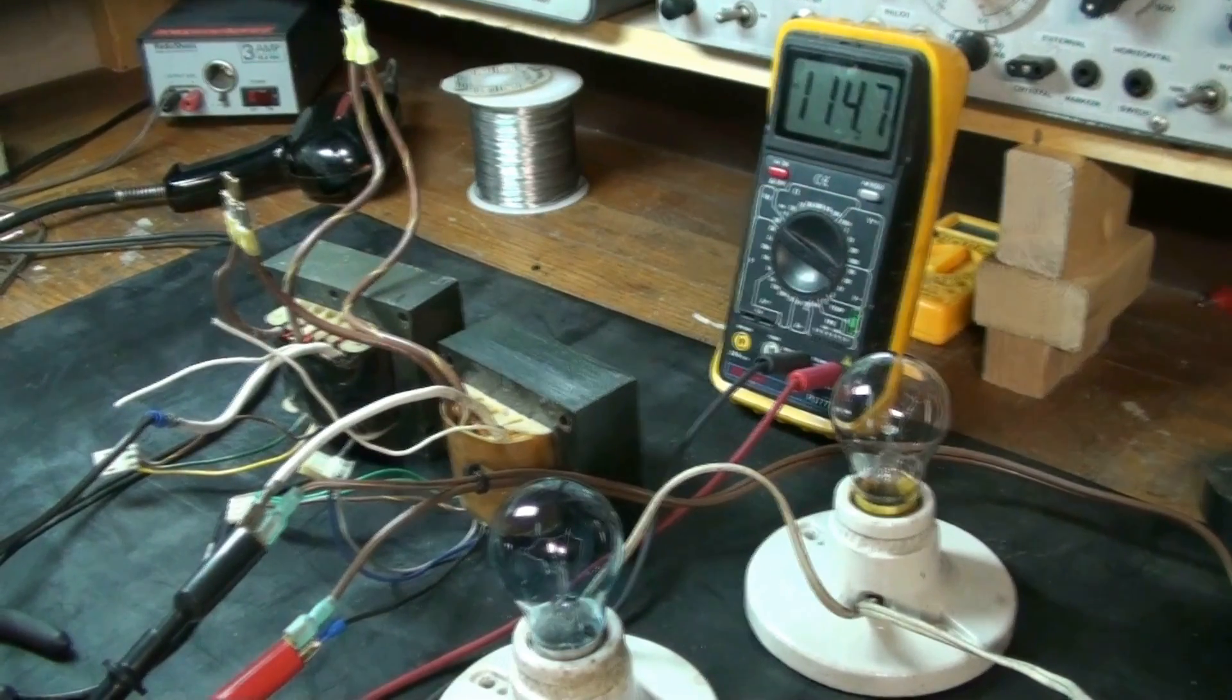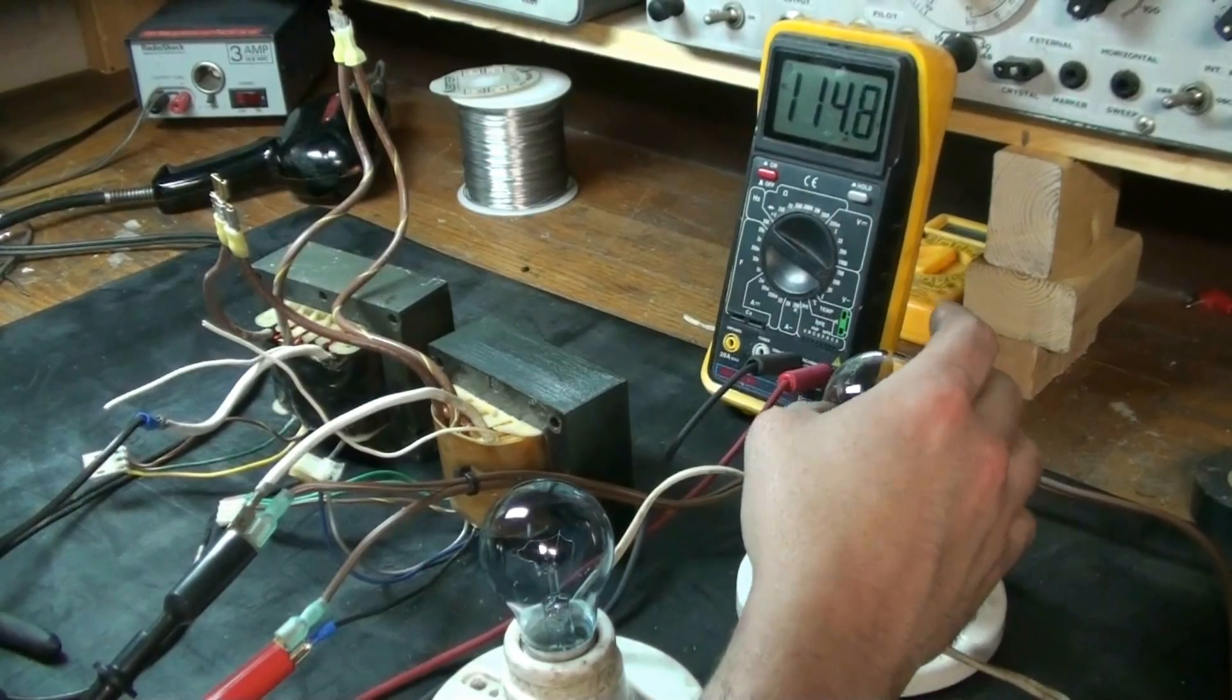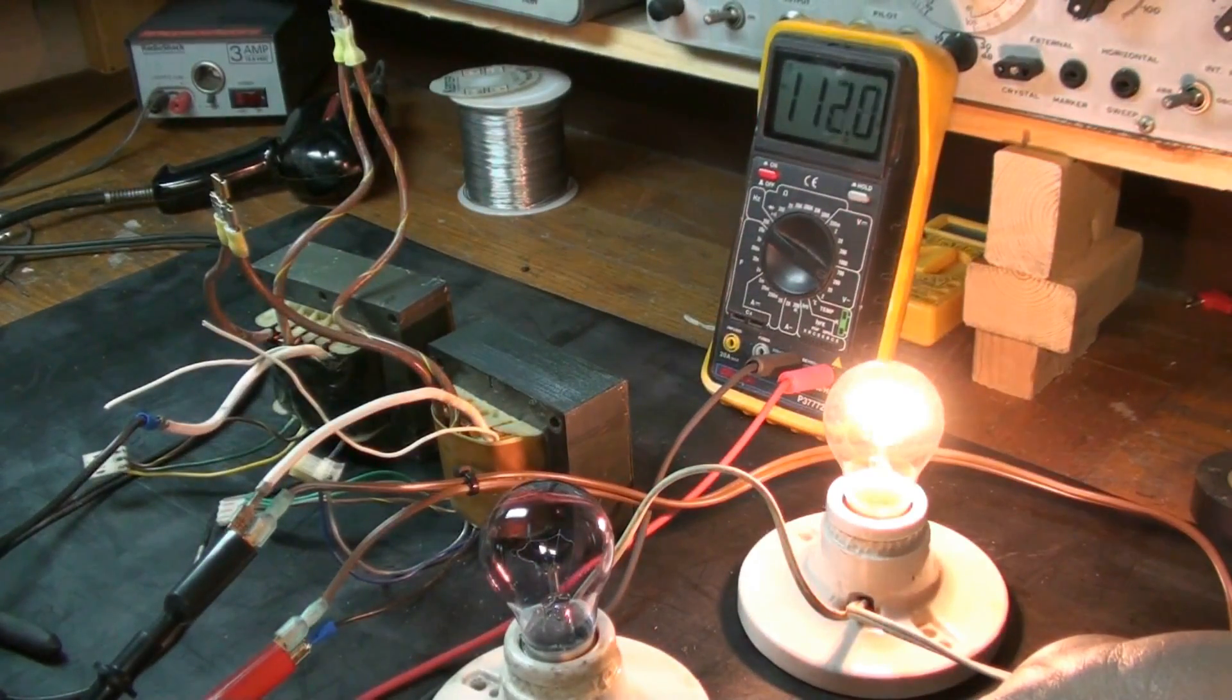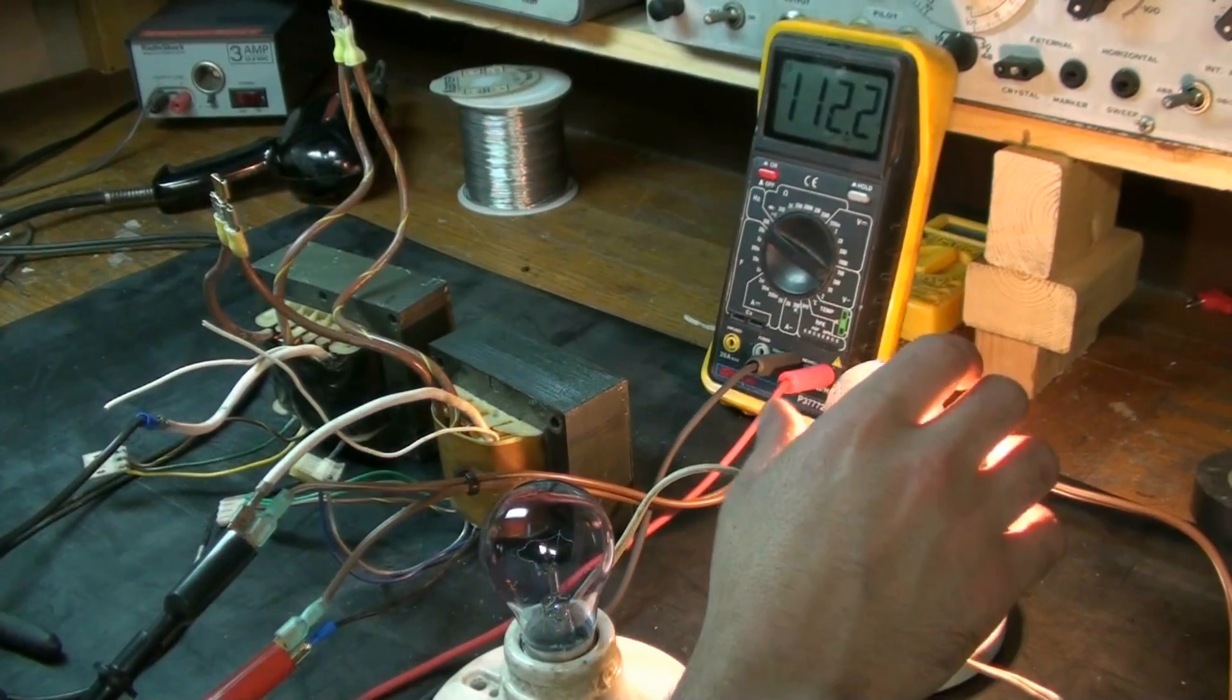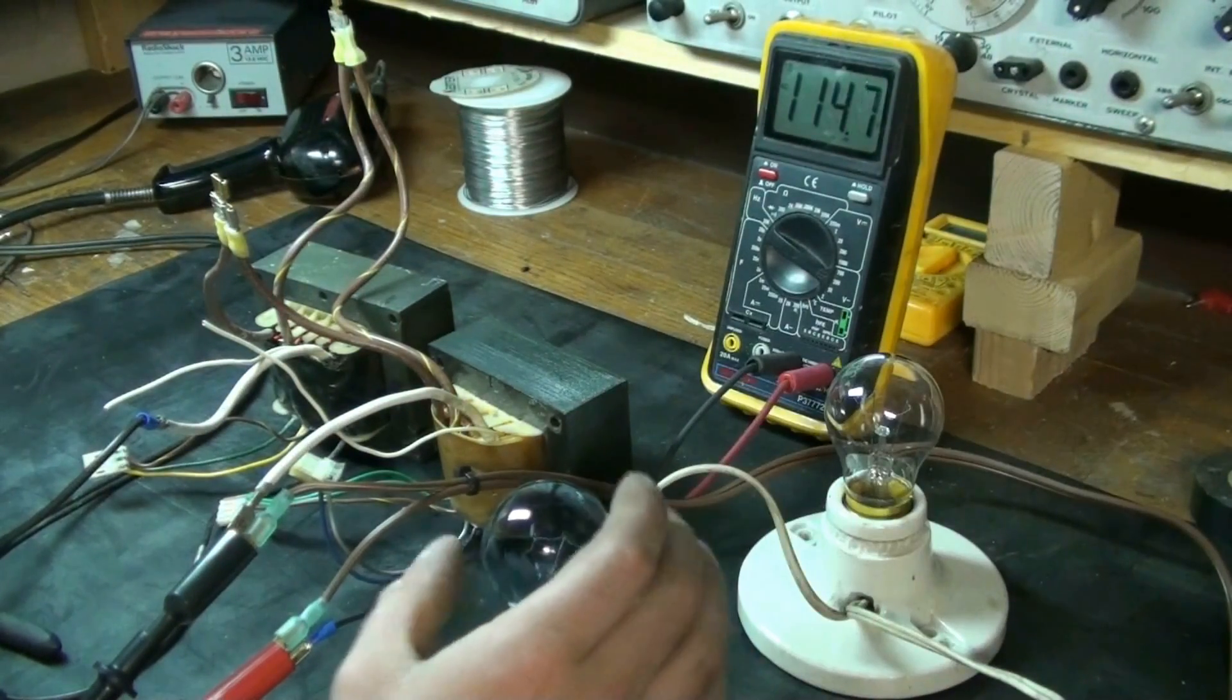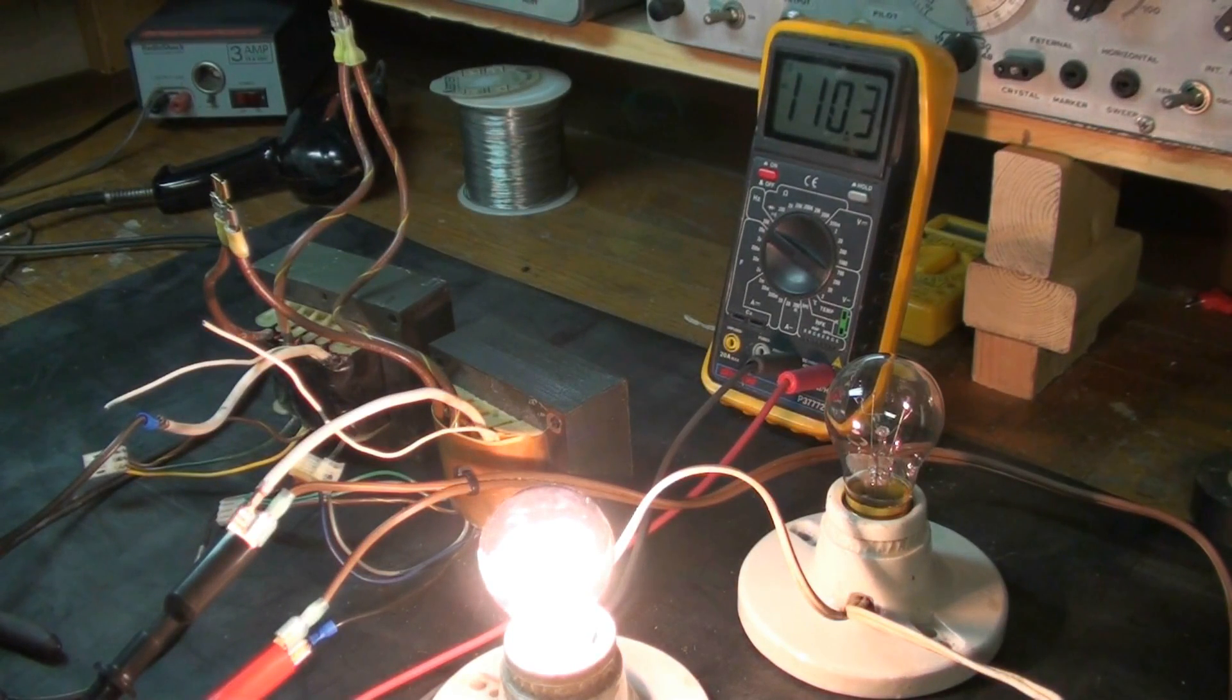Alright, we're reading 114.7 volts. Let's turn on the 40 watt bulb - 112 volts. Turn on the 60 watt bulb - we're down to 110 volts, holding fairly steady.